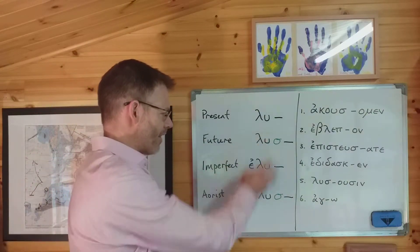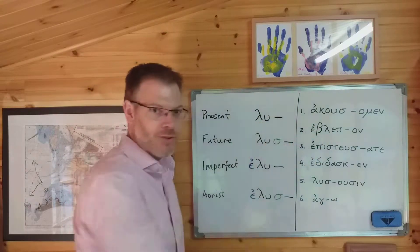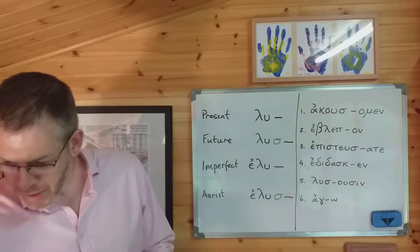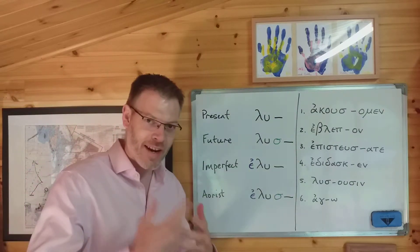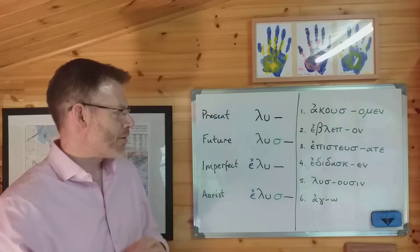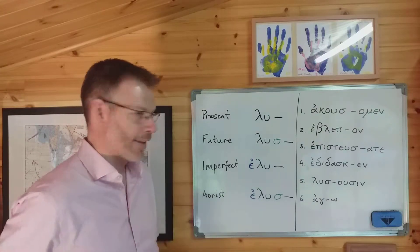So what we're going to do in this video then is to pick up that thread. We have looked at the meaning of the different tenses—present, future, imperfect, aorist—in the previous video. Now I want to show you basically how to recognize them, and then we'll go through the worked examples on page 67.